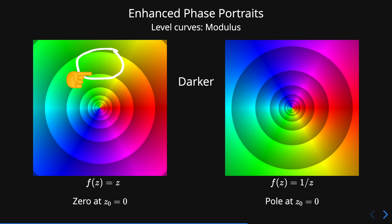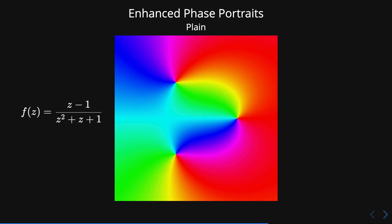On the other hand, when the function has a pole, the shading is inverted. It goes from darker to lighter. Here we have again the plain phase portrait of this rational function. We already identified three points where the colors meet.